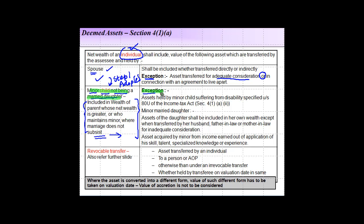The exception to the rule that an asset transferred to a minor child is taxable in the hands of the individual is: assets held by a minor child suffering from a disability referred to in Section 80U of the Income Tax Act. If the minor child has any such disability, the assets will not be included in the hands of the individual.